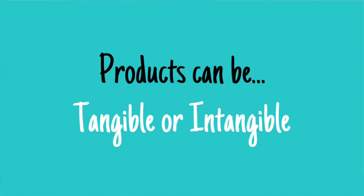Products can be either tangible, meaning that you can touch them and they're physical like this cup, or a product could be something that's non-tangible or intangible — which would be something maybe like this video. You can't really touch the video, but you can watch it. Or if you have an online course, something like that, that would be an intangible product.